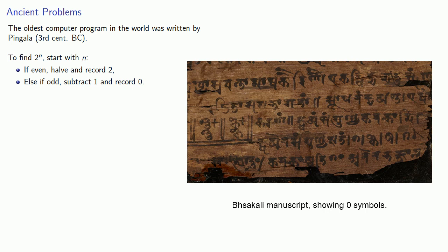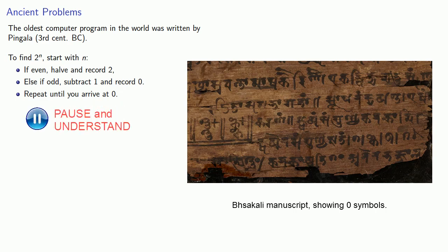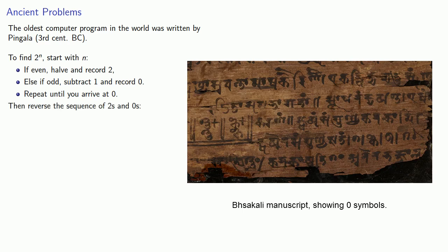This process of either halving or subtracting 1 will modify our working number, and so we're going to repeat this process until we arrive at 0. What we end up with is a sequence of 2s and 0s. To write the actual program, we're going to reverse that sequence of 2s and 0s. And then the interpreter, which in Pingala's time was a human being, would follow these directions. We're going to start with the number 1.